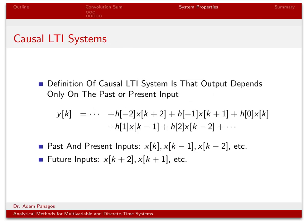Another way to classify linear time invariant systems is whether they are causal or not. A causal system is one that depends only on past or present inputs. Causal systems make sense — they only react based on what's happening right now or what happened in the past; they don't react based on things in the future. Looking at our discrete time convolution written in expanded form, we can identify the present input x[k] and the past inputs x[k−1], x[k−2], etc.